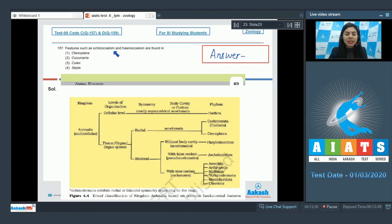Question 157: Features such as schizocoel and hemocoel are found in Tenoplana, Cucumeria, Culex, or Sepia. True coeloms are of two types, schizocoel and enterocoel. Schizocoel is formed by splitting of mesodermal layer. Schizocoel and hemocoel are characteristic of arthropods. Hemocoels are sinuses or body cavities through which blood flows, and the body cells are in direct contact with the circulating blood.